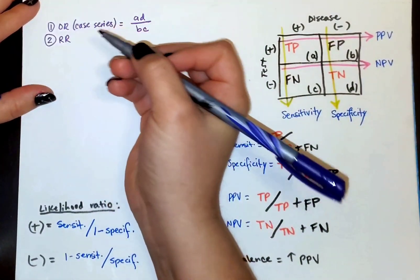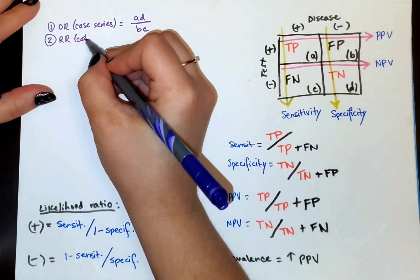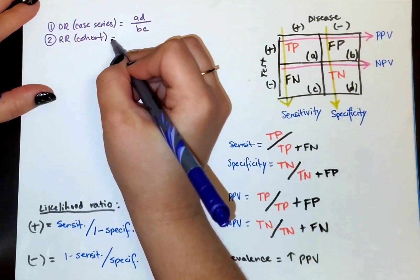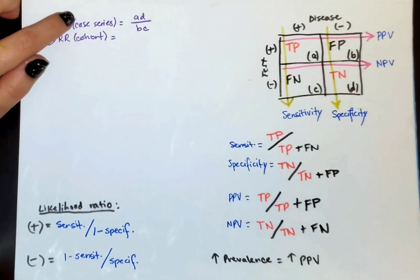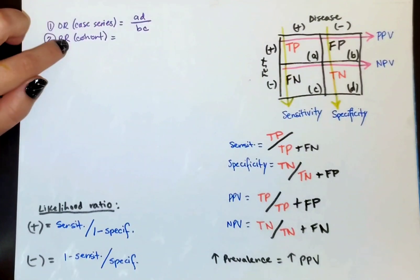The next step is relative risk. This one is associated with cohort studies, where we start off with exposure. And usually we're going to see how that relates to development of a disease, possible development of a disease. So in case series, we start with disease status. In cohort, we start with exposure status.